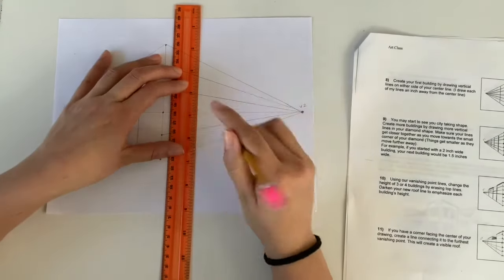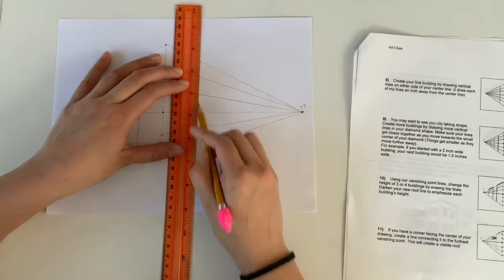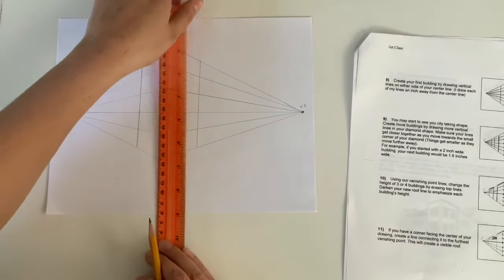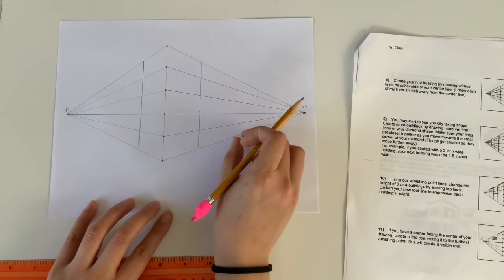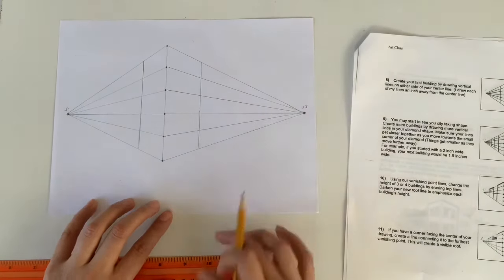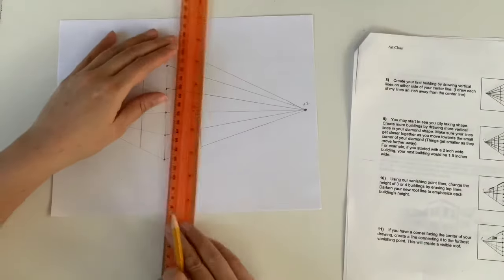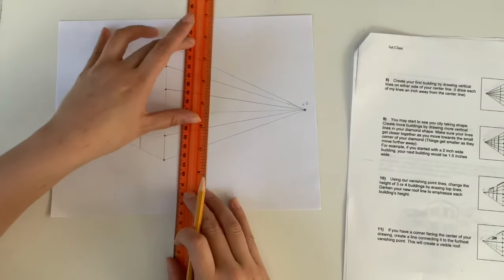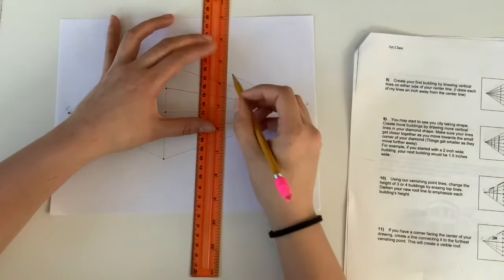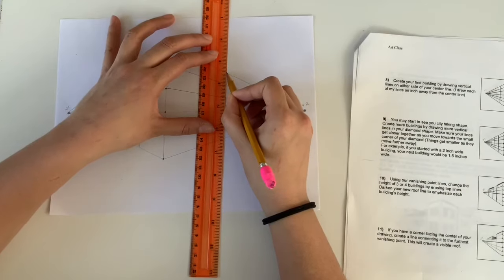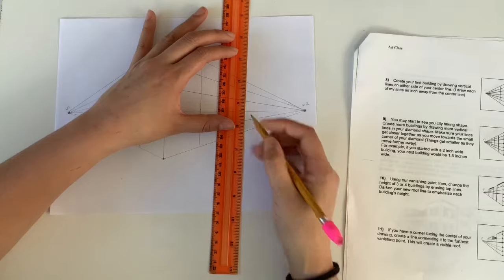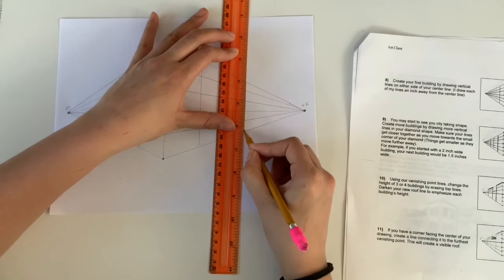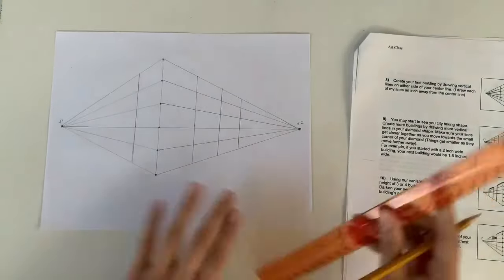When you're done with your first building it's time to move on to our buildings that are a little bit further away. Now when you're drawing with perspective it's important to show that things are getting smaller and closer together as they get further. For my next building I'm going to make it slightly more narrow than my first one. I'm not going to measure this one out I'm just going to eyeball it just to make sure it's a little bit thinner than that first corner building I did. And the closer I get to my vanishing point the more narrow my buildings are going to be.